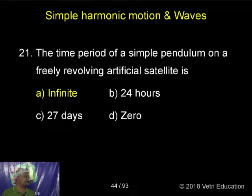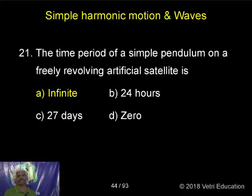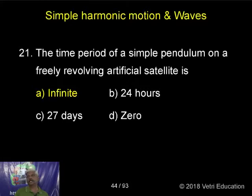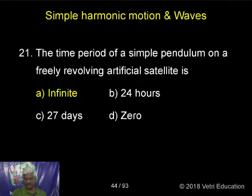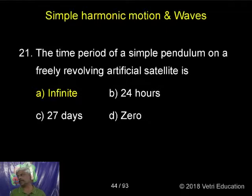The time period of a simple pendulum on a freely revolving artificial satellite is always infinity. This is also what we discussed: when the simple pendulum is doing the experiment, T equals 2π√(l/g). Here, the value of g is zero. Since g becomes zero, anything divided by zero gives infinity.